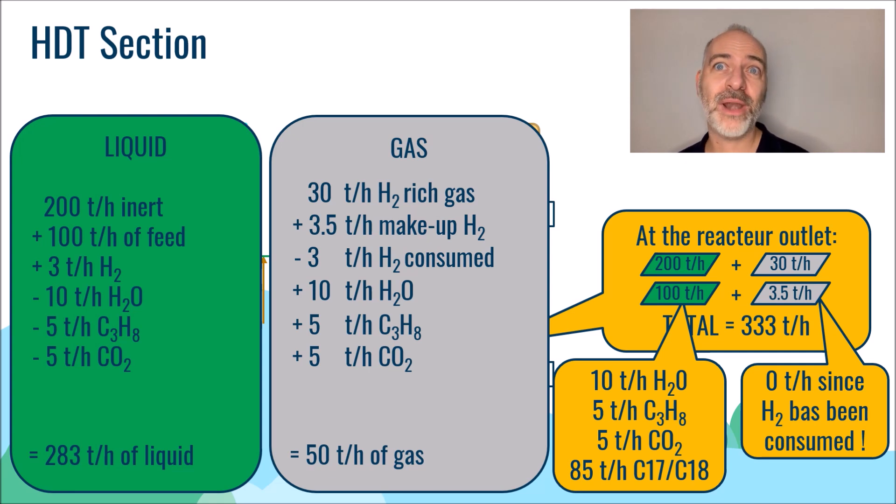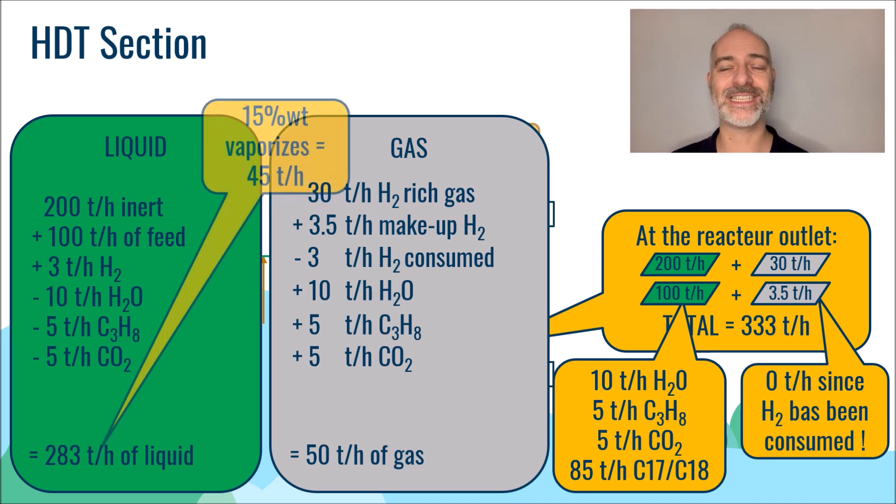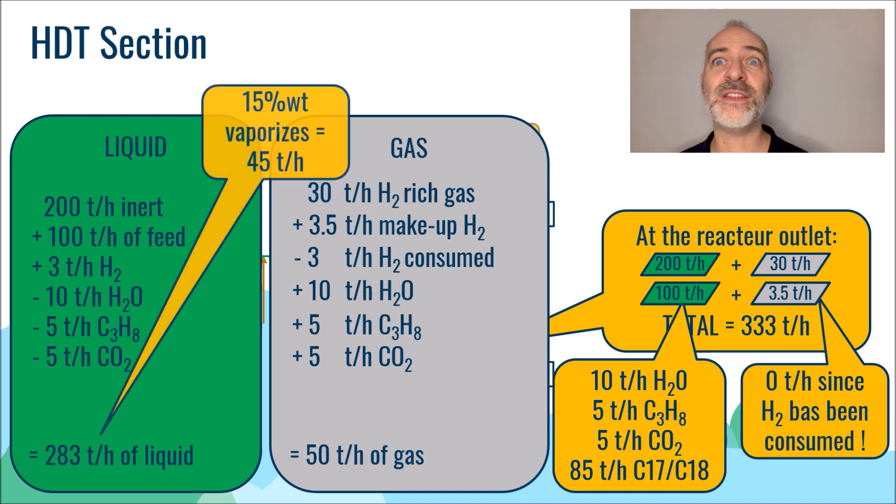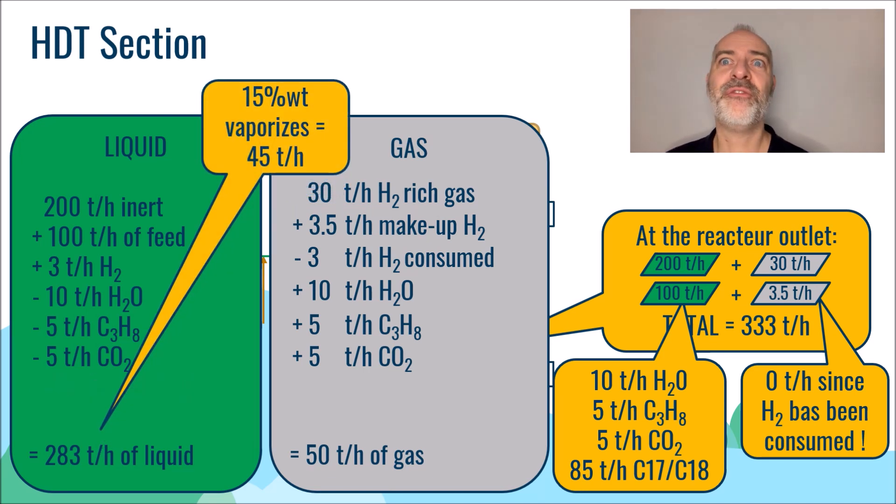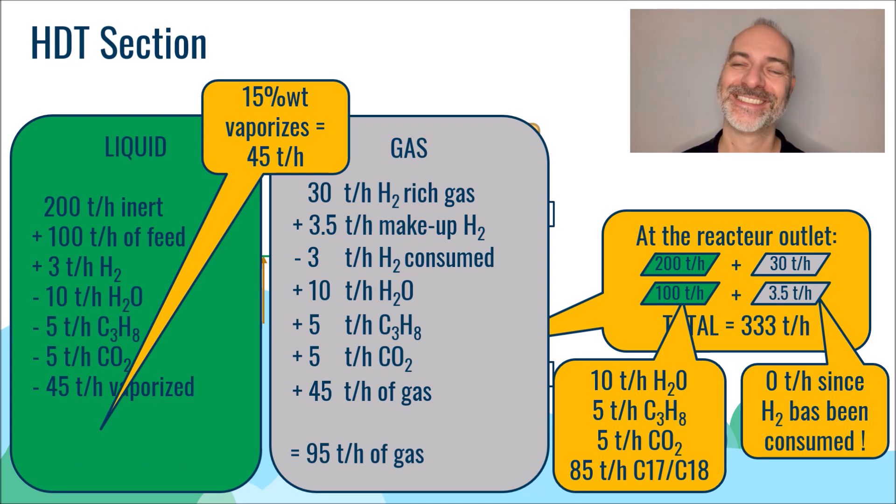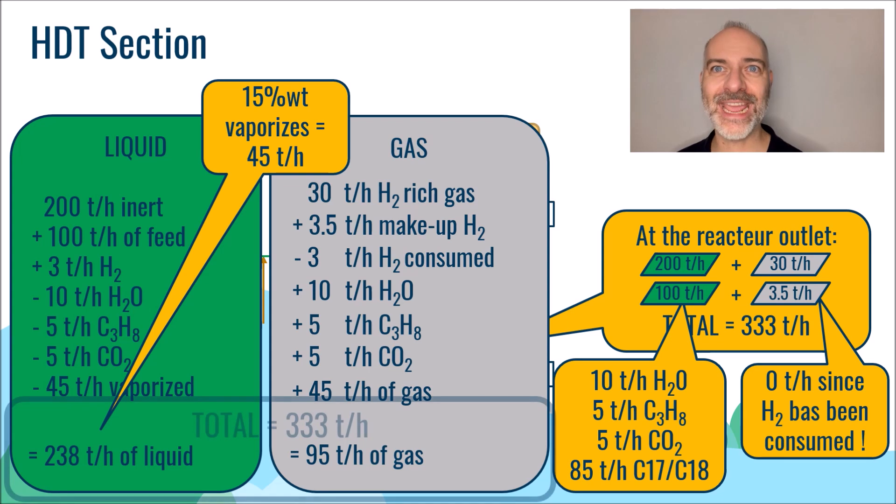However, at the reactor outlet temperature, about 15 weight percent of this liquid molecule vaporized. This means that we now have, in gas phase, 50 plus 15 percent of 283 tons per hour, or a quantity of 95 tons per hour of gas, and 238 tons per hour of liquid. And we still have our 238 plus 95 equals 333 tons per hour of molecules.